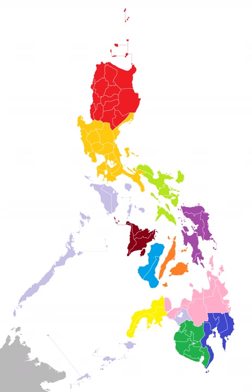Regarding bellwether provinces, since the creation of the province of Basilan, the province has always had its provincial winner go on to be elected president. The national winner has always been the winner in Negros Oriental, except in 1961 and 2016. Candidates usually win their home provinces, and by extension their region, except when the province has two or more candidates as residents.